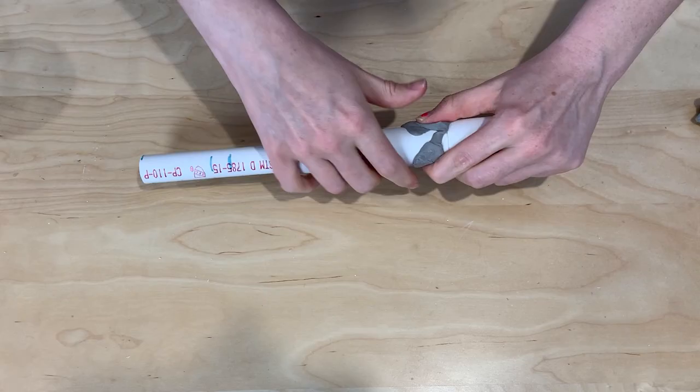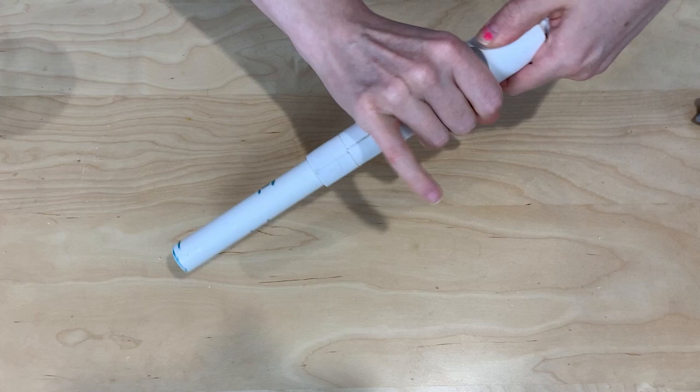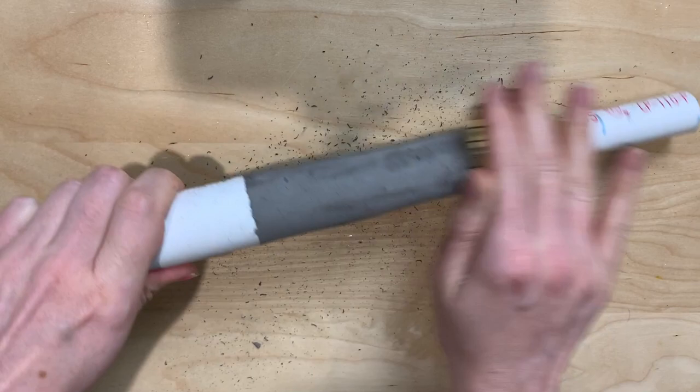For the tapered section of the handle, I started by creating a base out of layers of EVA foam, 2mm foam stacked up to create an initial taper. Then I used foam clay over the top of that and smoothed it out to create the tapered handle. Lastly, once the foam clay was dry, I sanded it down using a fine grit sandpaper to a smooth finish.